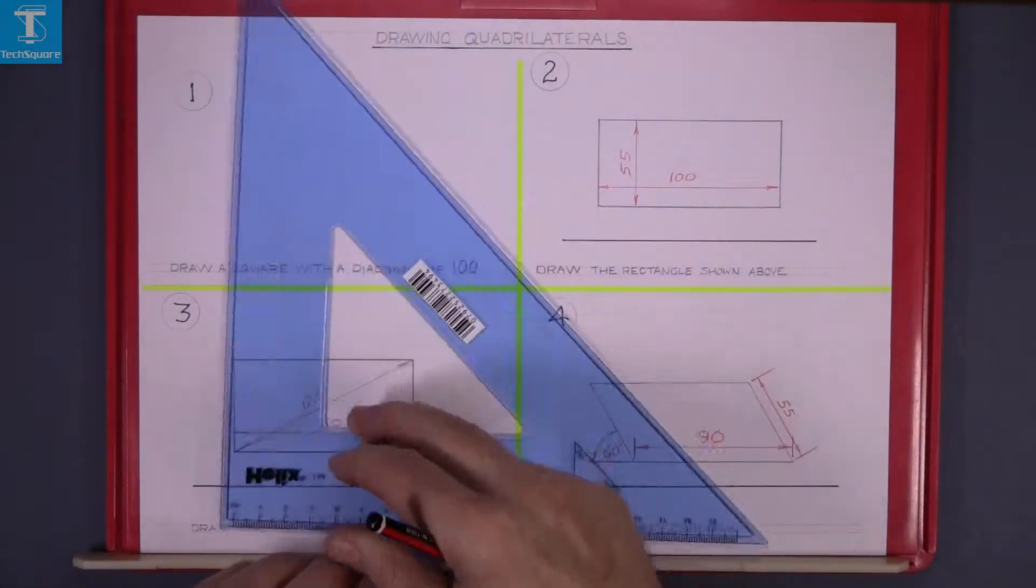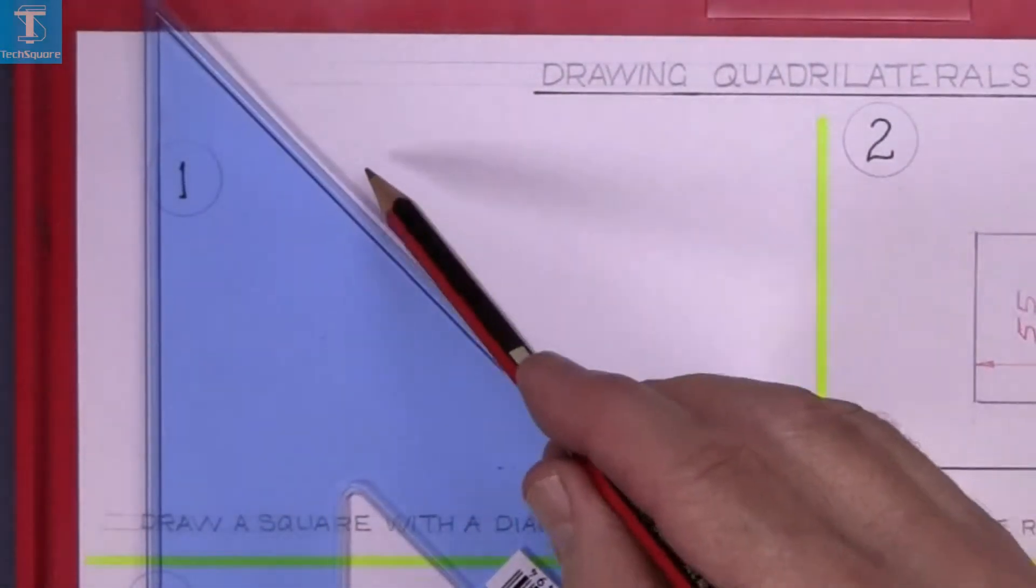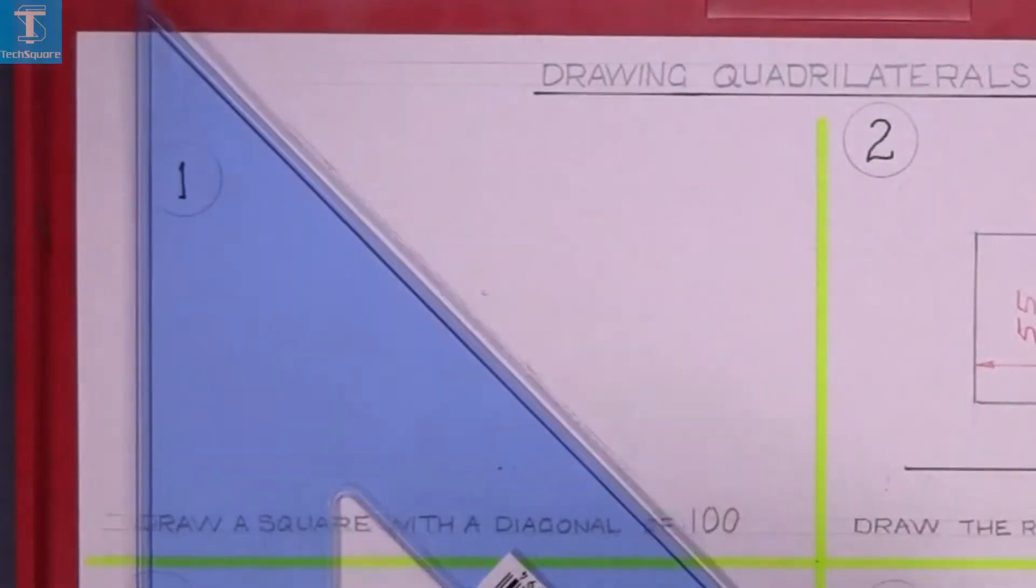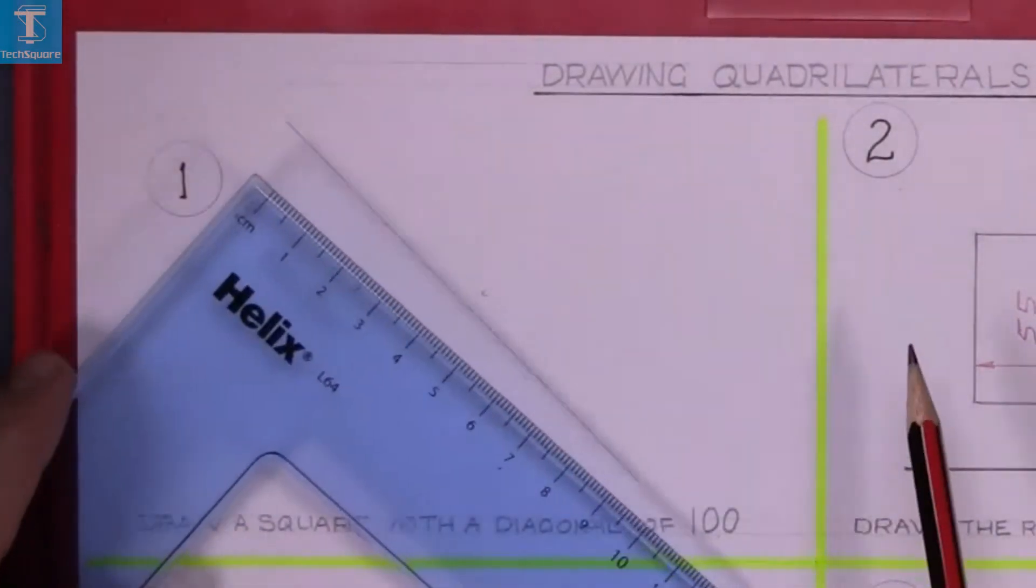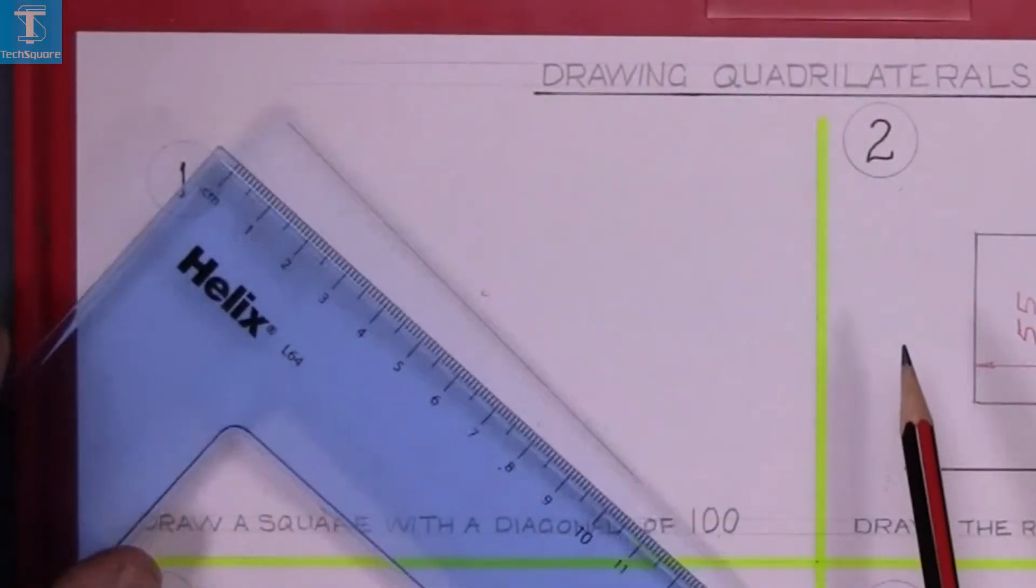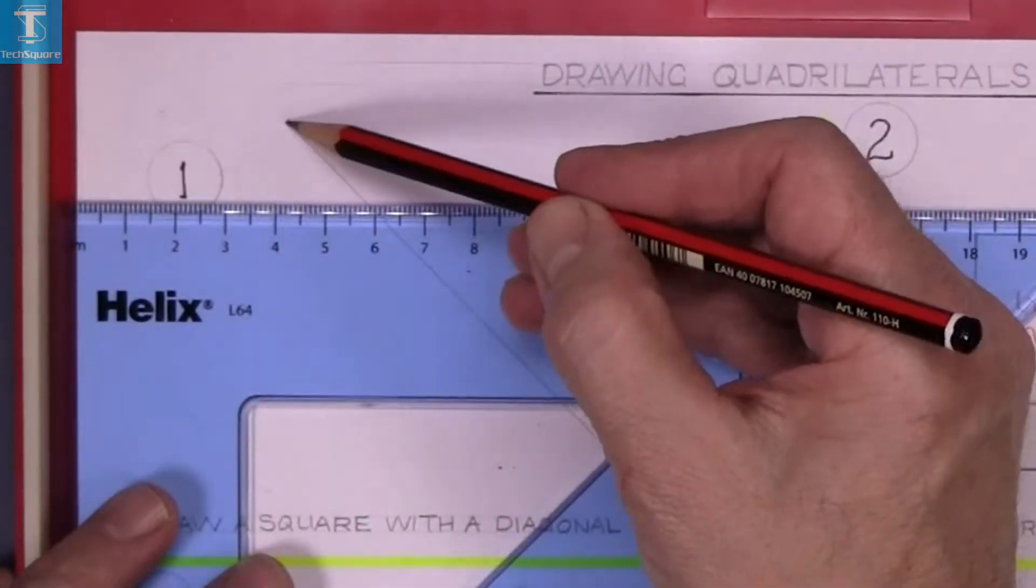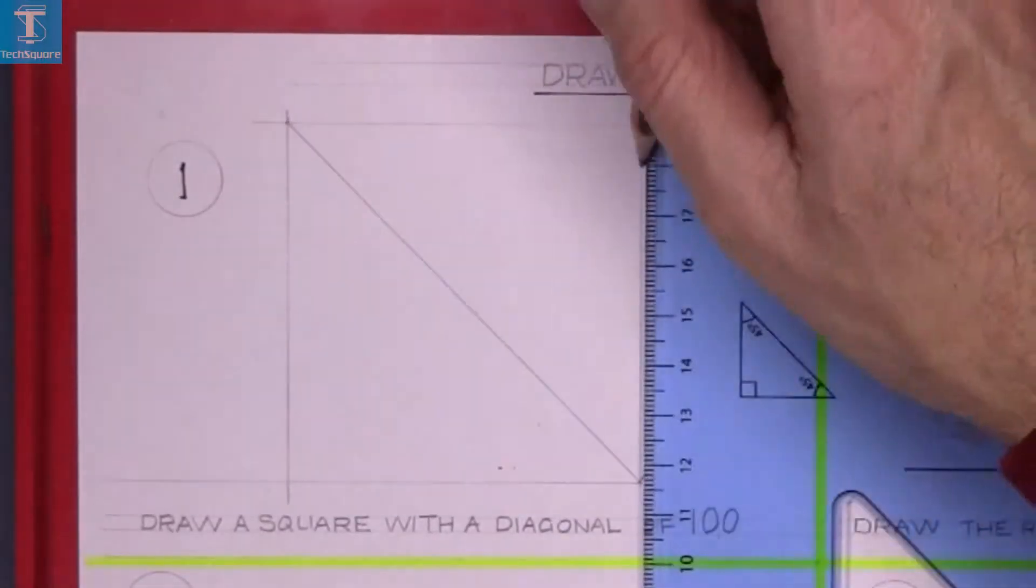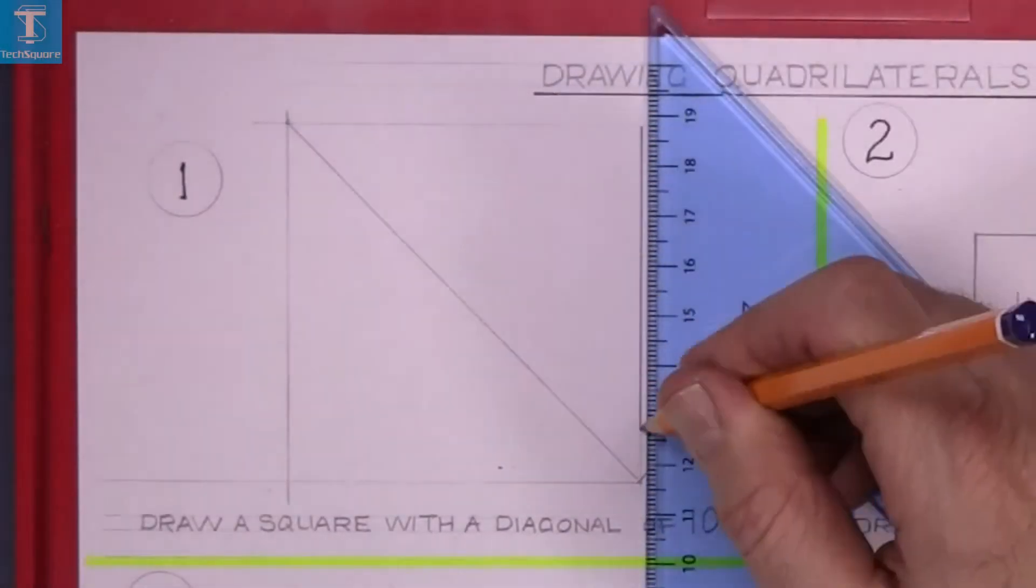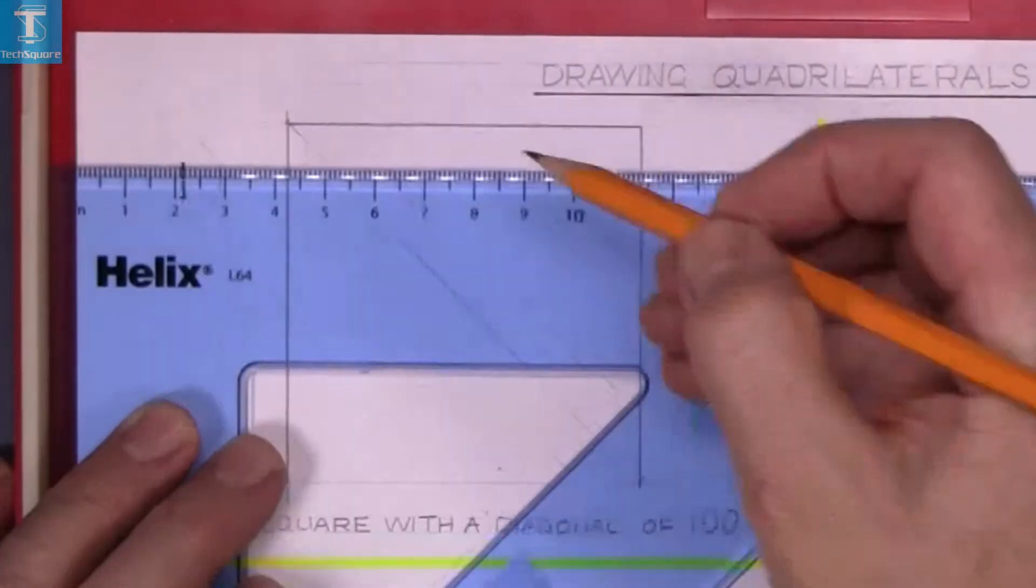So the first thing we are going to do is set off a line at 45 degrees and then mark off the length required which is 100 millimetres. Mark the two points and then draw horizontally through those and vertically through them, and that is your square set out. Now just line that in and that is a square with a diagonal of 100.